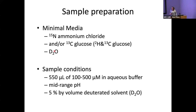For the purified sample at the end, we would ideally like 550 microlitres of your protein between 100 and 500 micromolar concentration in an aqueous buffer at mid-range pH, though that will depend on the pI of your protein. We just add 5% by volume of deuterated solvent such as D2O, which helps our experiments work.